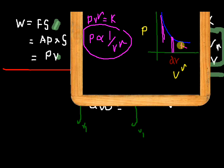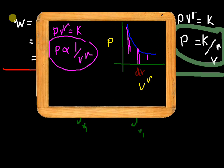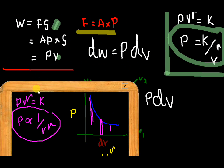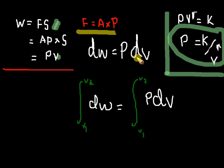As this is a curve, we have to consider a small strip. That small strip — this length will be dV and this is P. So in order to find the small work, we have to find the product of pressure and a small volume. That is, dW equal to P into dV.